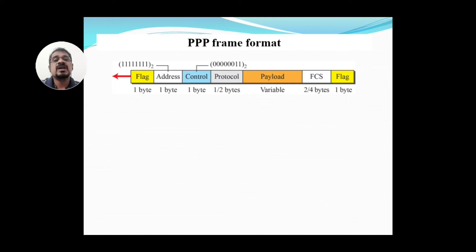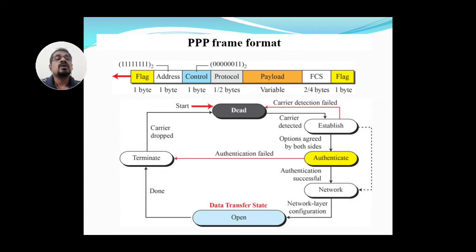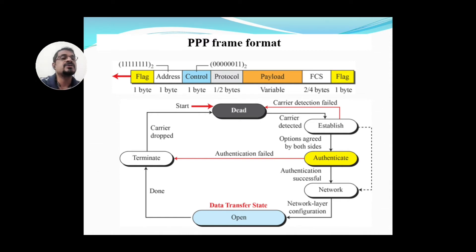This is the frame format for PPP, which is more or less similar to the HDLC frame format. It starts and ends with a flag byte for synchronization and identification. The address field is one byte, the control field is one byte, the protocol field is two bytes, the payload is variable in size, and the frame check sequence is either two or four bytes, followed by a one-byte closing flag.